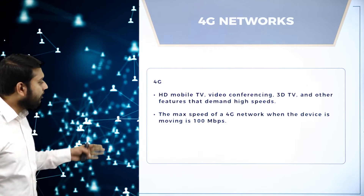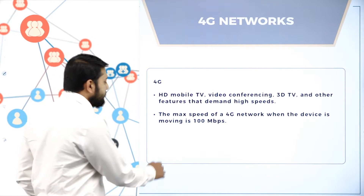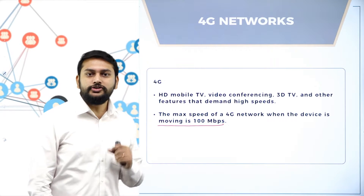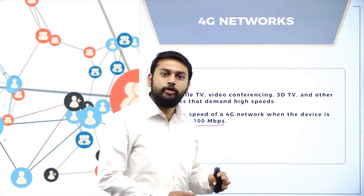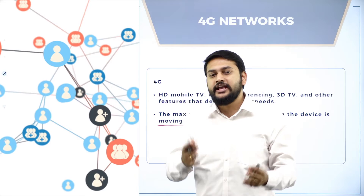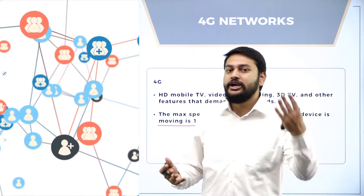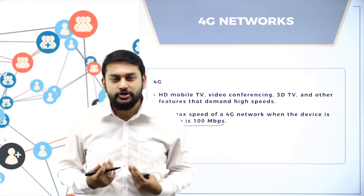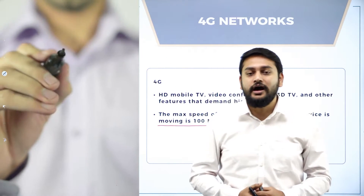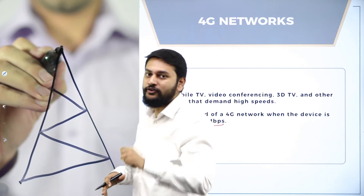High-speed internet — you cannot imagine what 4G provides. The maximum speed of a 4G network for a moving device is 100 Mbps. This is just amazing. Because of the introduction of 4G, a lot of applications started evolving. The best example is our live interactive online classes — without proper internet, it would not have been possible to have a classroom feel.